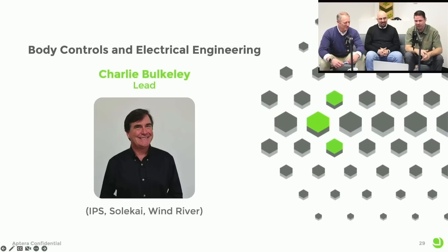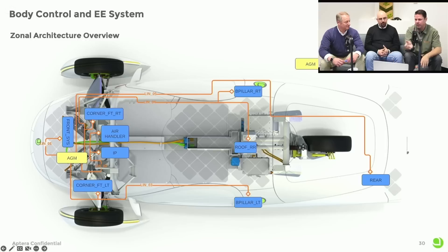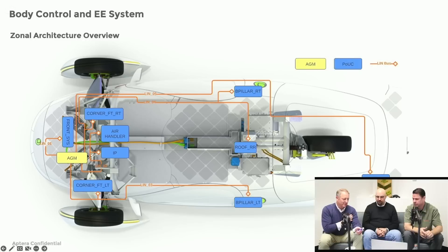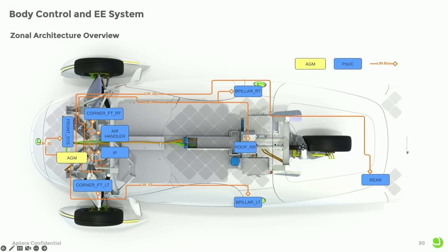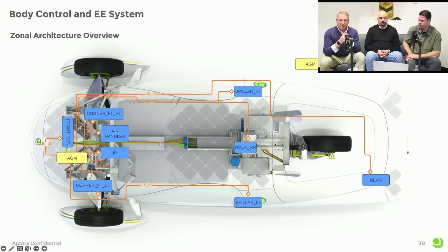Charlie is leading our body controls and electrical engineering and really leading the team that controls the zonal architecture. Just to elaborate a little bit about this, you might imagine a single wiring harness—why would you even think about this? Why would this be an area of focus for us? Even with modern OEMs, one of the biggest problems for warranty and repairs are wiring harnesses, the connectors. Simply by reducing the size of the wiring harness, reducing the number of connectors and connections, you can increase quality and reliability by moving all that to silicon, to circuit boards.